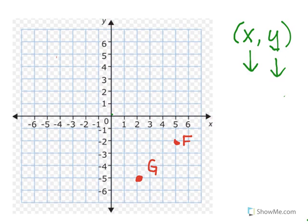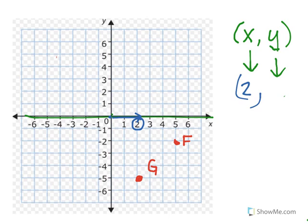Point G. To get to point G, if we're talking about the x-axis, I'm going to move from my point of origin one, two — two units to the right. So my x is positive. But to get to point G on the y-axis — remember, the y-axis goes up and down — I have to move down. If I'm moving down, it's negative. I've got to go down one, two, three, four, five. So my y-axis is going to be negative five.